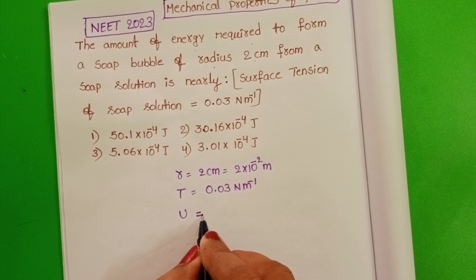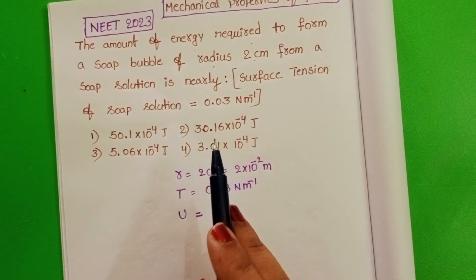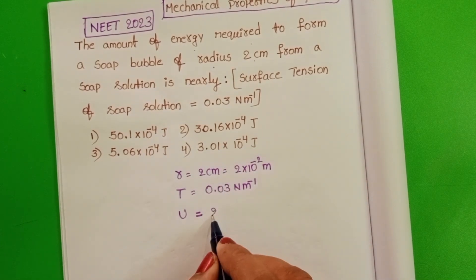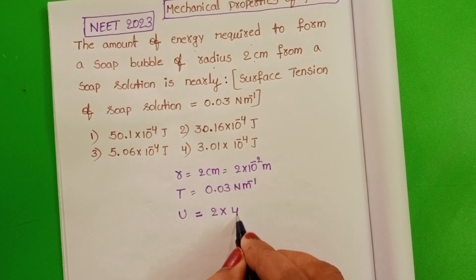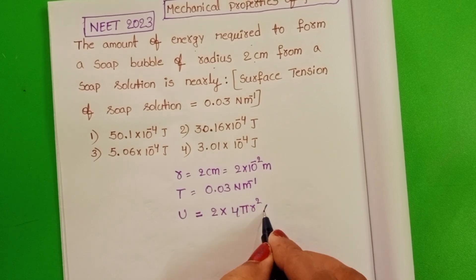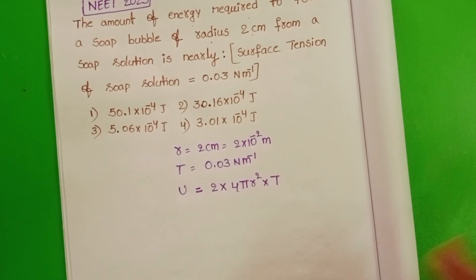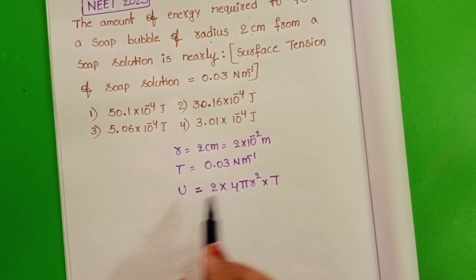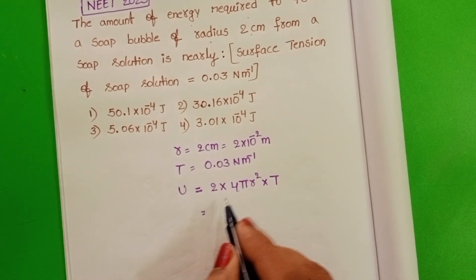Amount of energy is equals to... Soap bubble has 2 surfaces, so take 2 into 4 pi R square into surface tension. This is the formula to find out the amount of energy required to form a soap bubble.